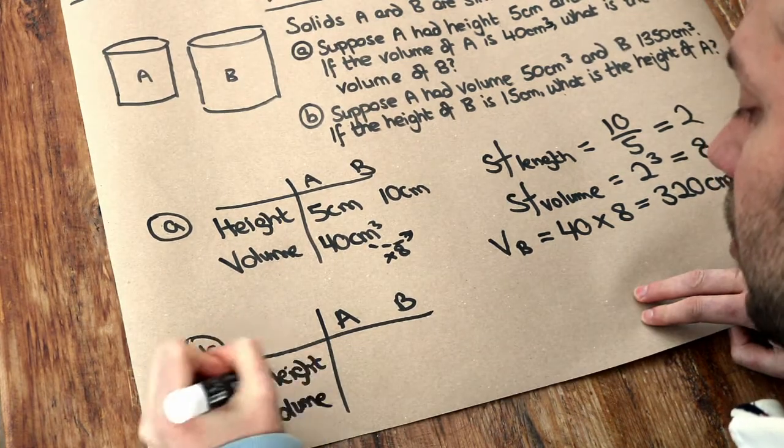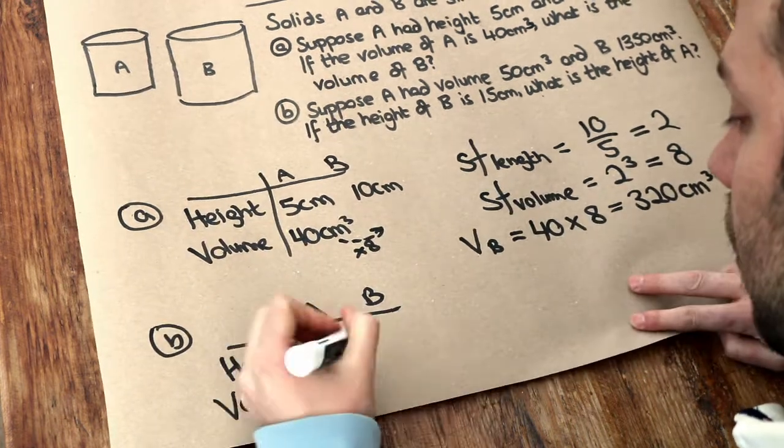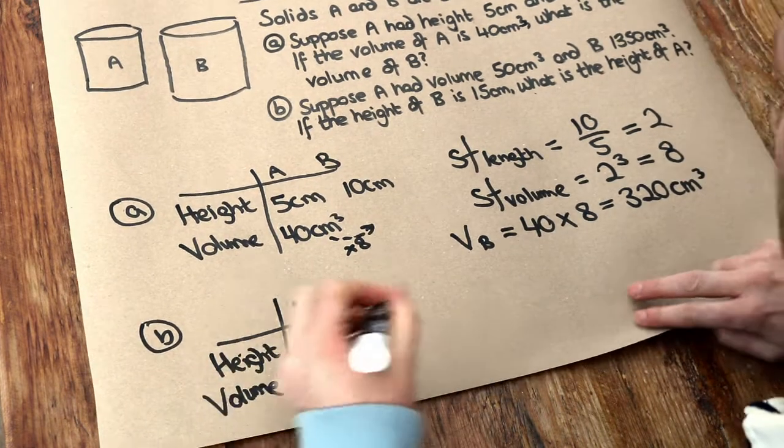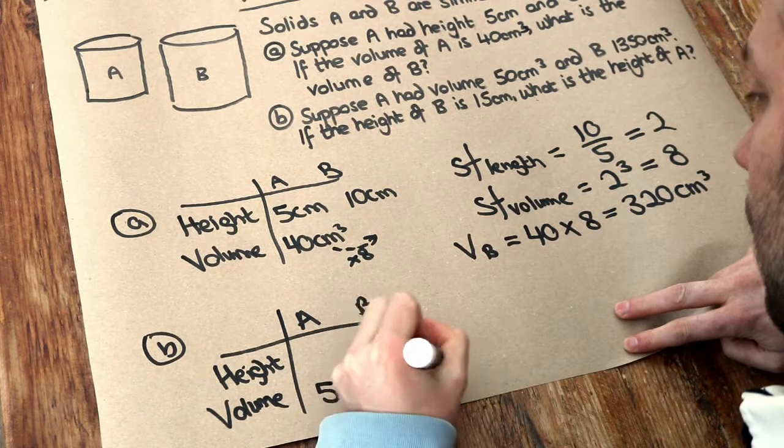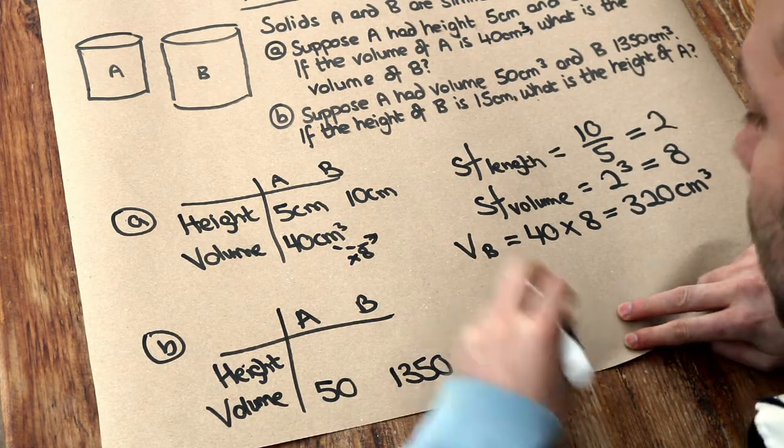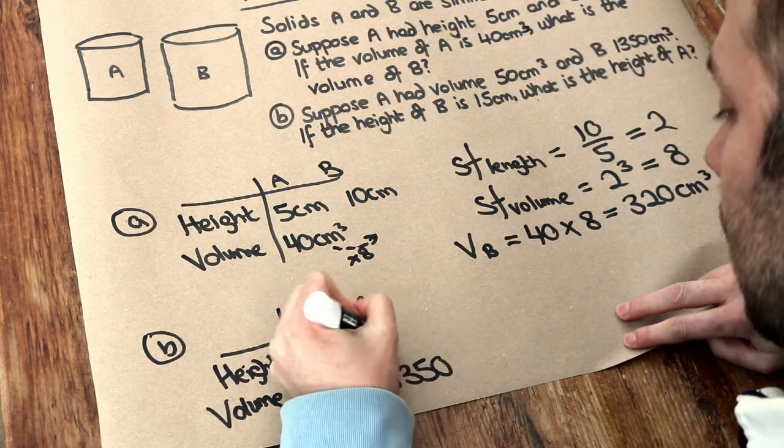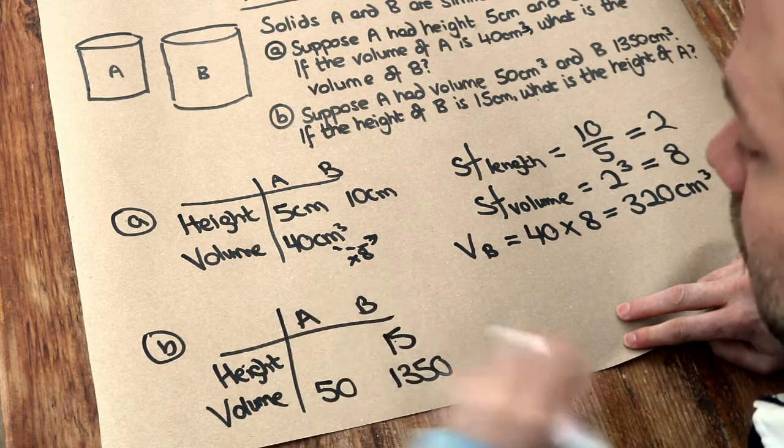So this time we're given the two volumes. We've got the volumes of 50 centimetres cubed and 1,350 centimetres cubed. And we're also given the height of B, which is 15, and we're trying to find the height in centimetres of A.